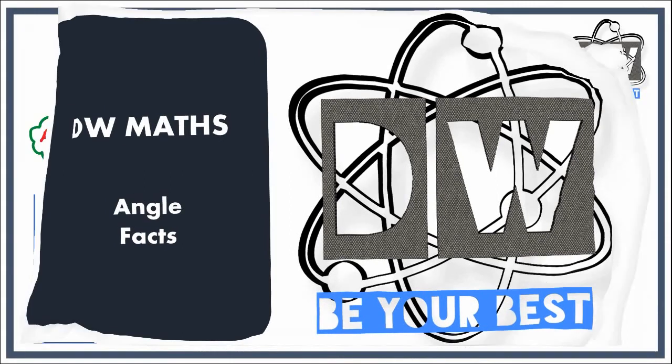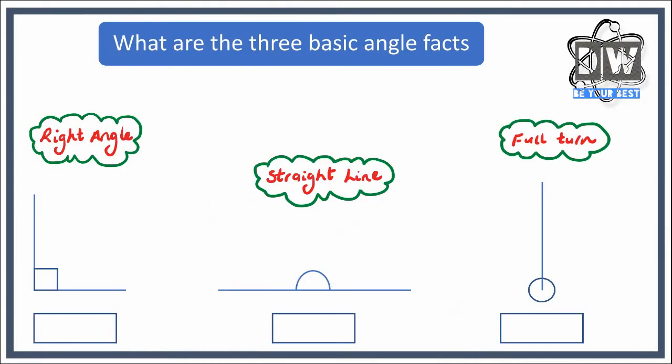So let's get straight into it. What are the three basic angle facts? We need to look at these and say what are these worth. We've got a right angle—what's it worth in degrees? What's a straight line worth? And what is a full turn worth? So let's go over the first one now.